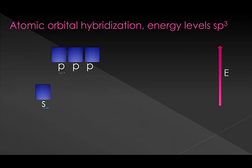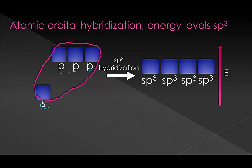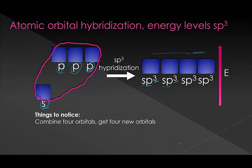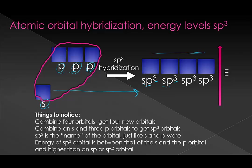Now we're combining all of our valence s and p orbitals — all four. We make four new orbitals; we start with four and end with four. They're named sp3 because you're taking three p orbitals. Notice there are no leftover p orbitals — all of our p orbitals have been used up. The energies of these are between the s and p orbitals, but now much closer to p than the previous hybridizations, because there are more p orbitals creating the new hybrid orbitals.